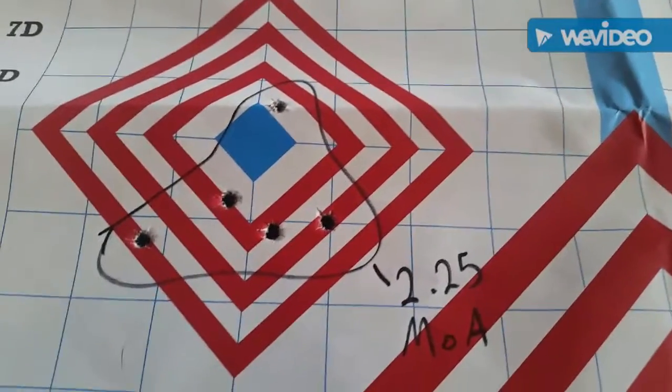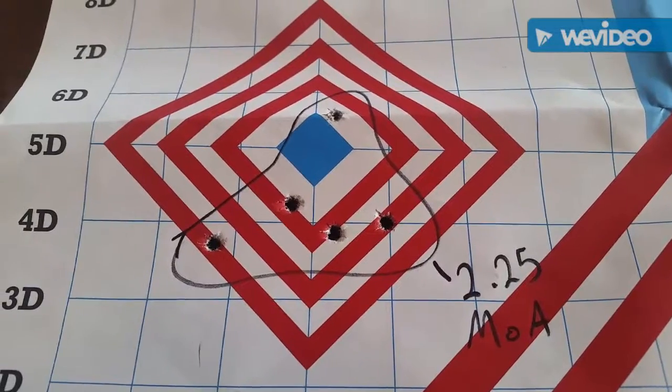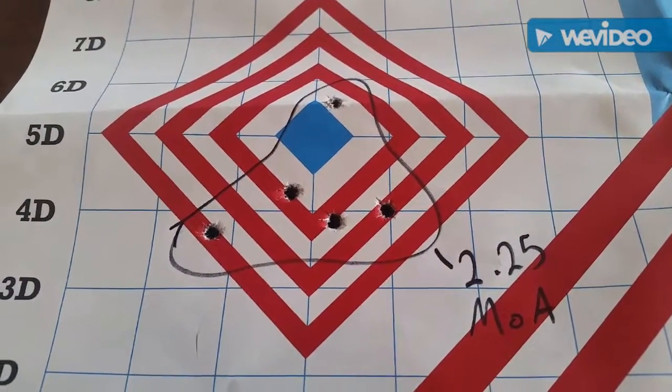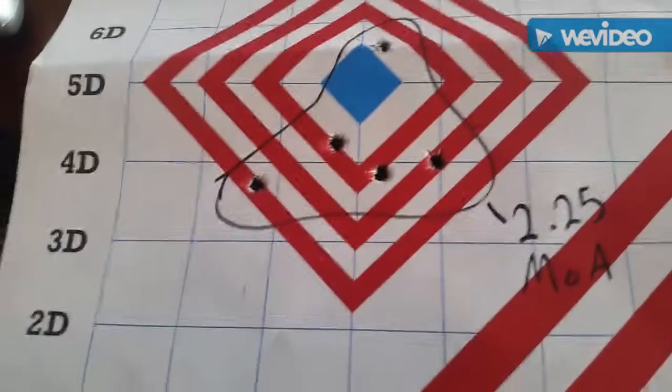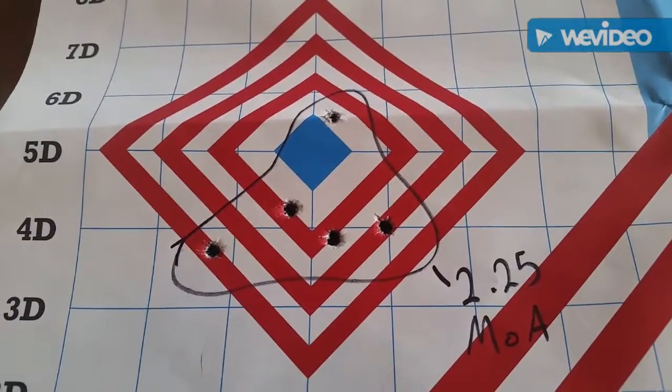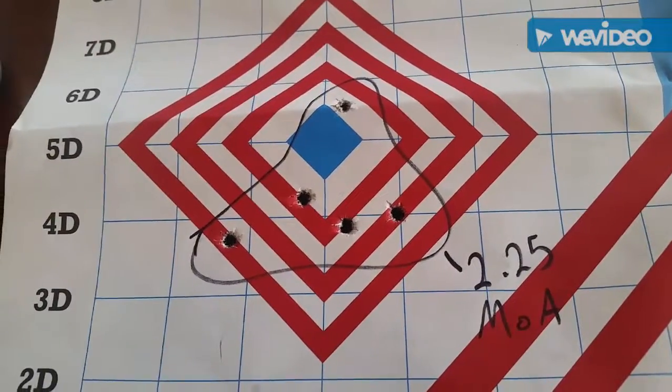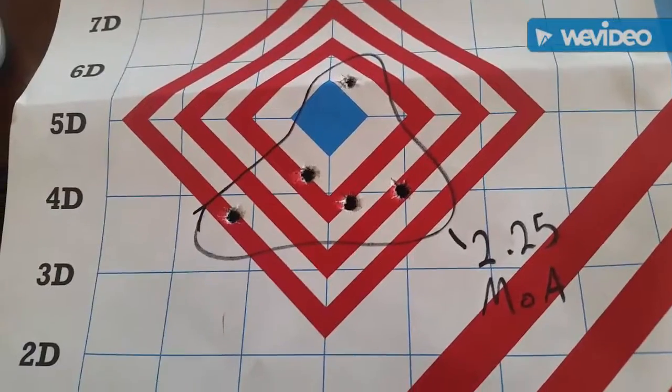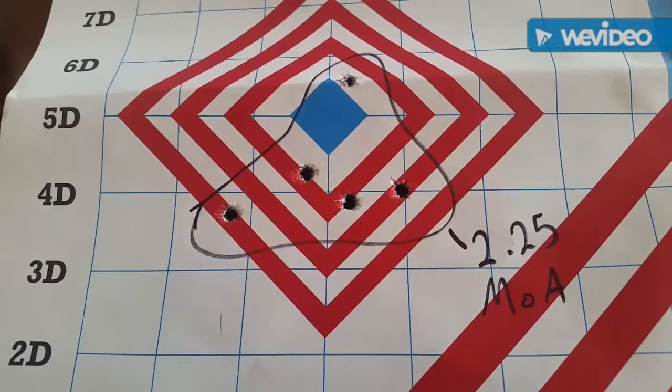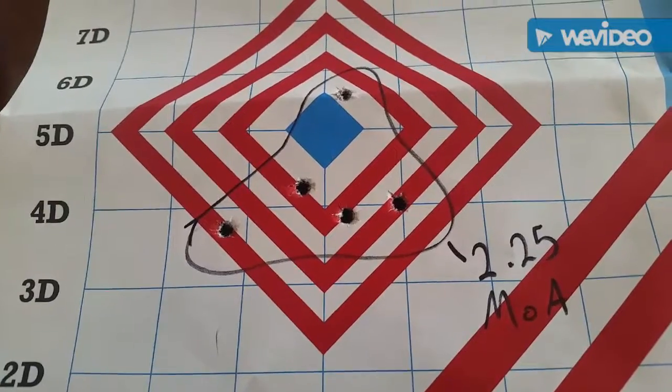Moving on to the last group: two and a quarter MOA. This group is interesting because the spread of the bottom four rounds from left to right is like two inches, about two and a quarter inches. The spread from the bottom left round to the top round is also two and a quarter inches. So either way it's a two and a quarter MOA group. I would have really loved to see this group be more consistent, like if that round up there at the top was somewhere down here in the middle.